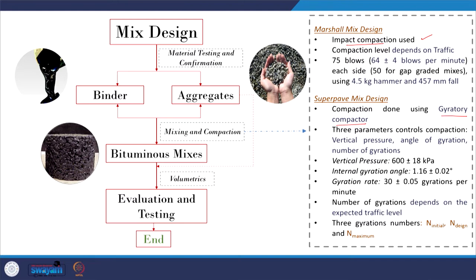Few literatures have indicated that the gyratory compactor produces a mixture with aggregate orientation very similar to what we get from in-field mixes compacted under rollers, though these are very few studies that have actually evaluated and validated the results. In Marshall mix design, impact compaction is used and the number of blows depends on the traffic level.